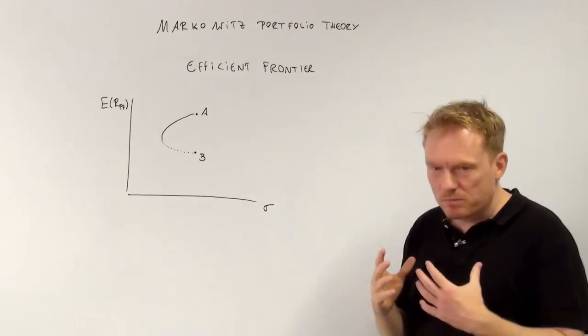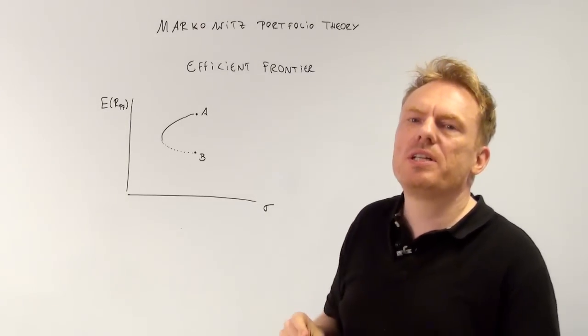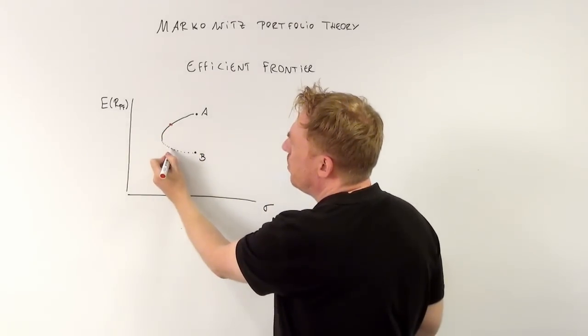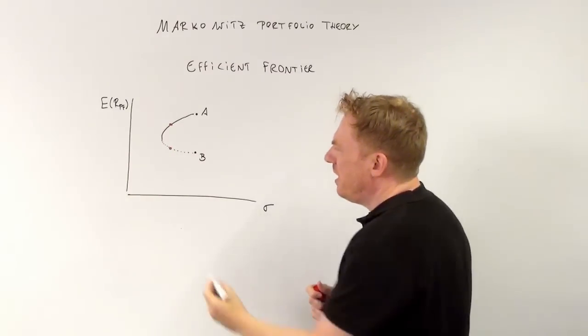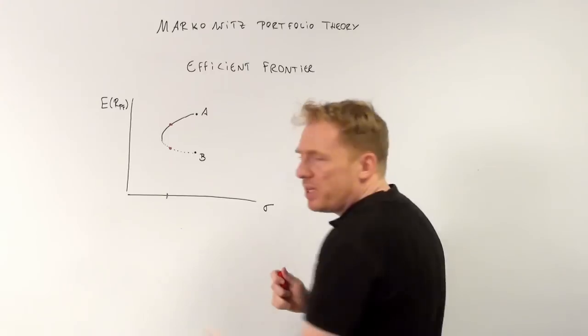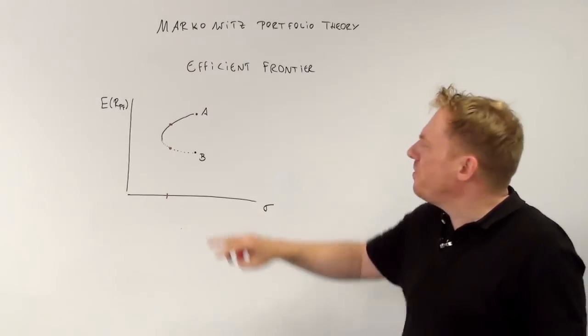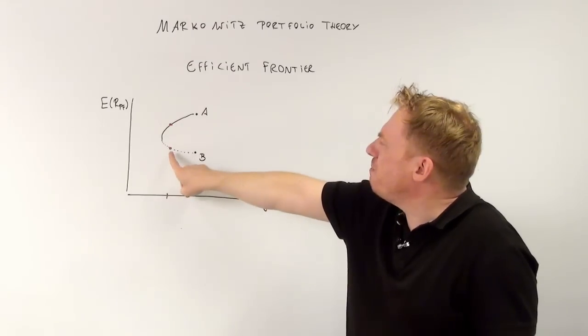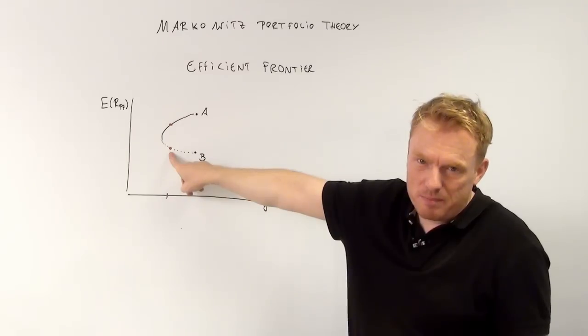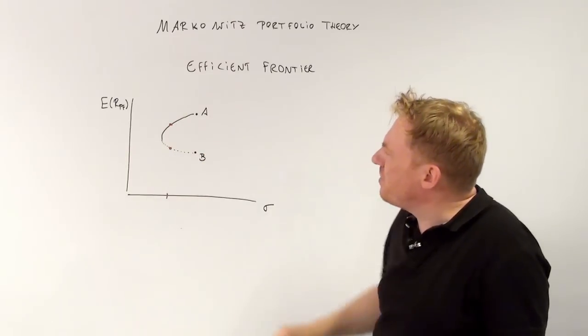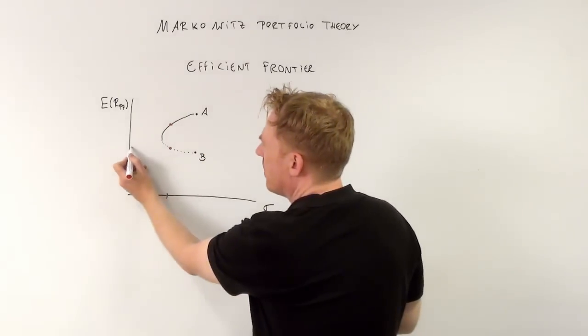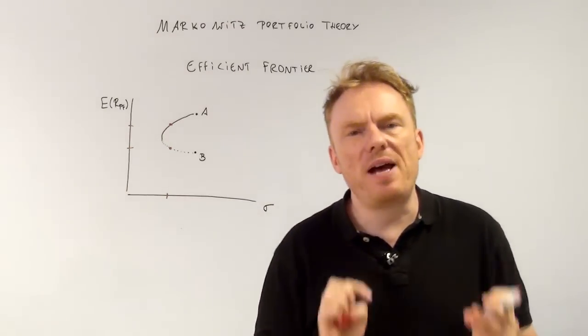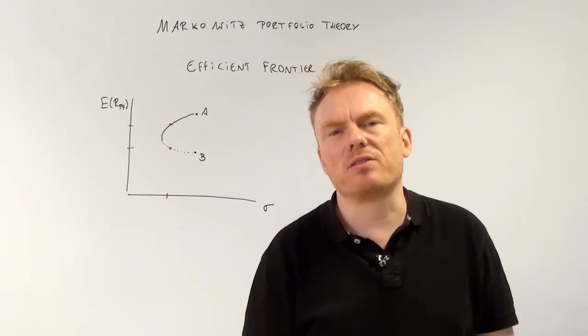Now there is one important aspect which leads us to the efficient frontier. If we compare this combination with this combination, it is clear to see that the risk is the same. The risk of those combinations, say 70% A and here maybe just 20% of share A. So the risk is the same, but there is one very important difference. The expected values, the expected returns, are not the same.